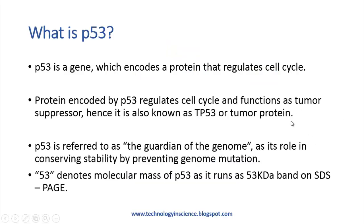What is P53? P53 is a gene which encodes a protein that regulates the cell cycle. The protein encoded by P53 regulates cell cycle and functions as a tumor suppressor, hence it is also known as TP53 or tumor protein. P53 is referred to as the guardian of the genome due to its role in conserving stability by preventing genome mutation. The number P53 denotes the molecular mass, as it runs as a 53 kilodalton band on SDS-PAGE.